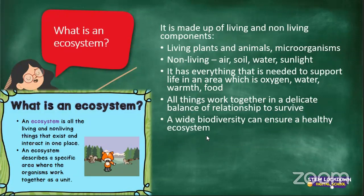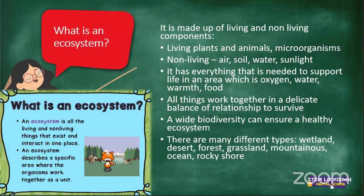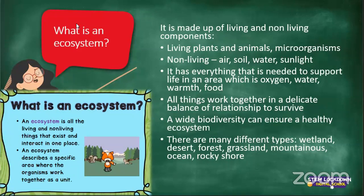There are many different types of ecosystems — what I have here is just the minimum. We've got wetlands, deserts, forests, grasslands, mountainous areas, the ocean, and rocky shores. In each and every single ecosystem there are components that help the survival of plants and animals.